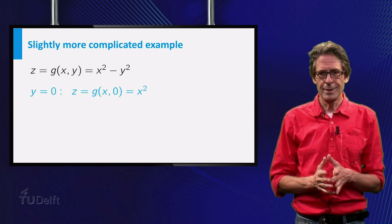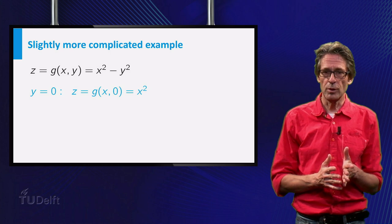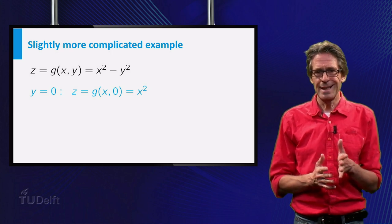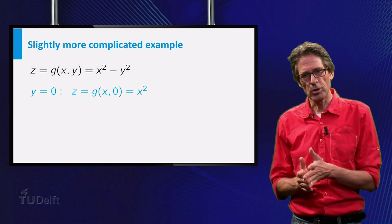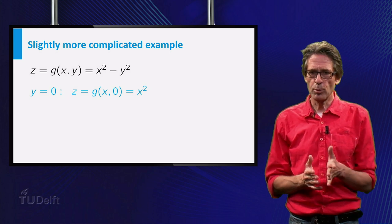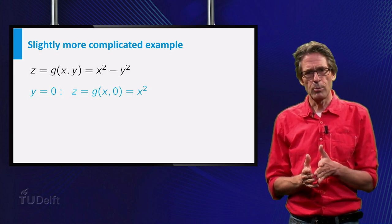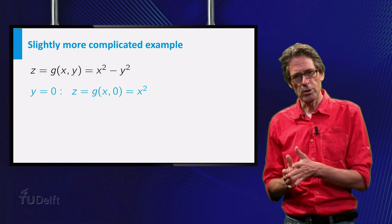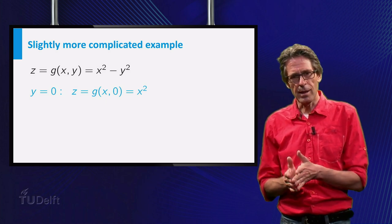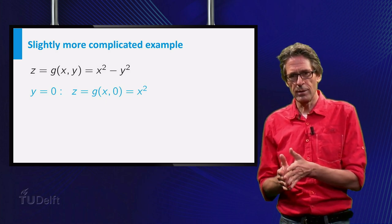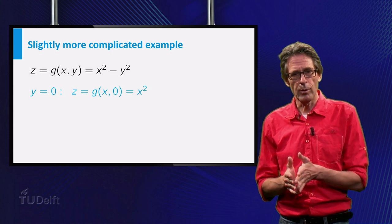When y equals zero, that is if you look at the function values in points (x, 0), g(x, 0) equals x squared. The corresponding points on the graph are the points (x, 0, x²), and they lie on a parabola in the x-z plane, with the minimum value of zero at the origin.